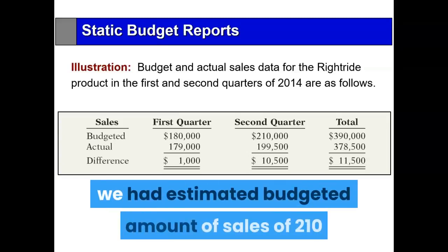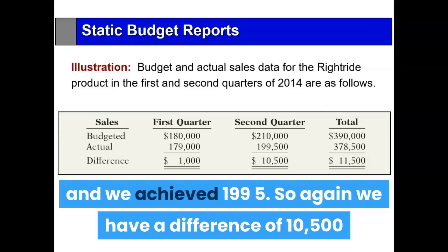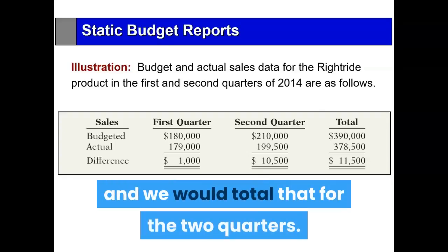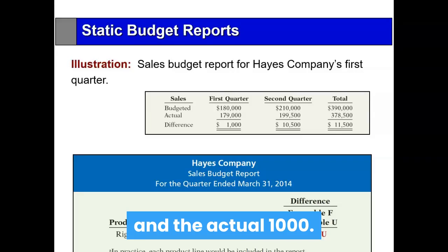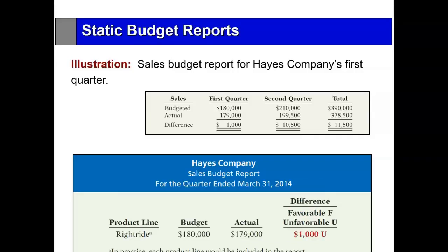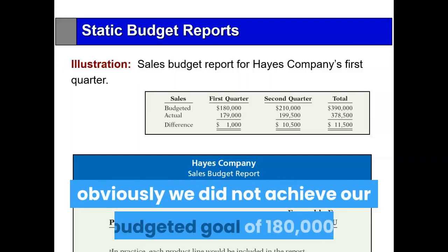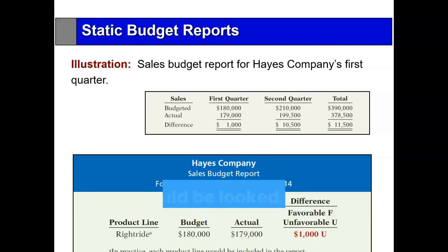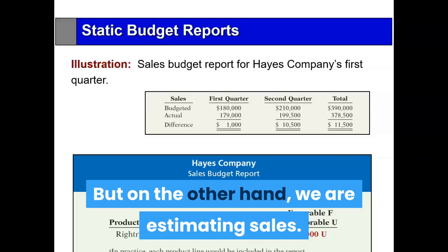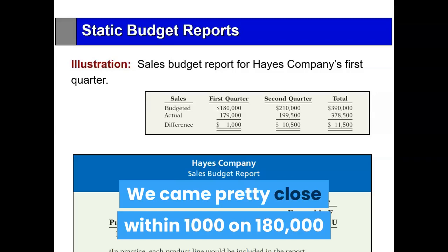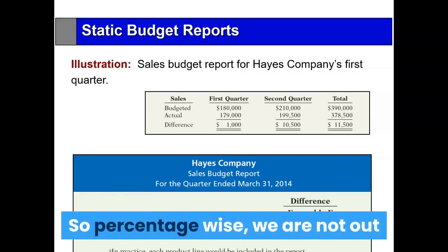In the second quarter, we had estimated budgeted sales of $210,000 and we achieved $199,500, so again we have a difference of $10,500. In the language of management, the sales report for Hayes Company by product line shows the budget, the actual, and the difference. That $1,000 is a variance, and we indicate if that variance is favorable or unfavorable. We did not achieve our budgeted goal of $180,000, so it would be unfavorable — but we came pretty close, within $1,000 on $180,000, so percentage-wise we are not out that much.